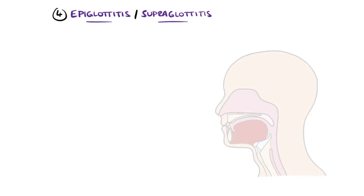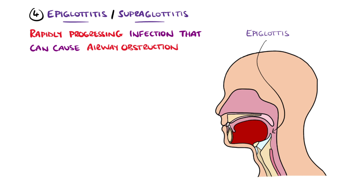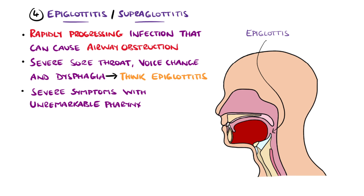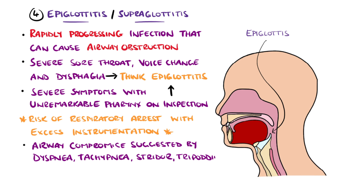Epiglottitis and supraglottitis are a rapidly progressing infection that can cause airway obstruction and death due to swelling of tissues above the vocal cords. For this reason, a presentation of severe sore throat, voice changes, and dysphagia is epiglottitis until proven otherwise. It should also be suspected in someone with a severe sore throat without evidence of pharyngitis on inspection. If suspected, the mouth should not be examined as instrumentation may precipitate respiratory arrest. Features suggesting airway compromise include dyspnea, tachypnea, stridor, and tripodding.